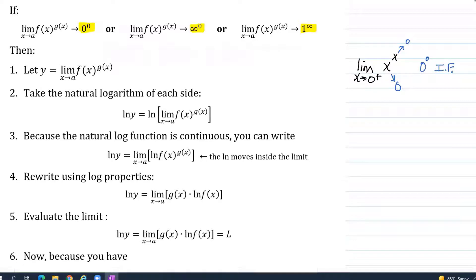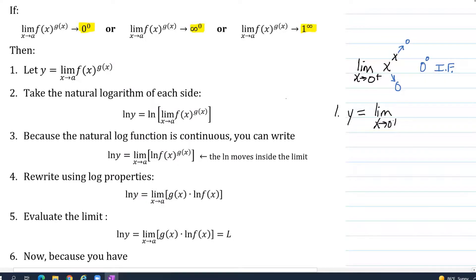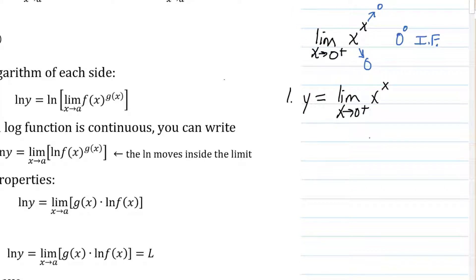So step one of the procedure tells us to let y equal that limit. Y equals the limit as x approaches zero from the right of x to the x power. We're going to take on step two the natural log of both sides.